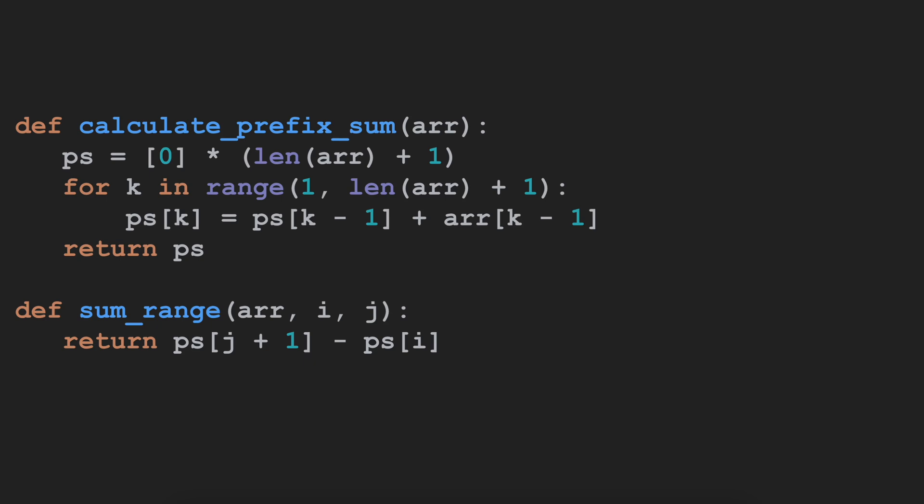And every time now when we are calling sum_range, we are just taking the prefix sum, the new array that we have just pre-calculated all the values, we are taking the value of j minus whatever the value of i and returning that. In this case, our time complexity of sum_range is now reduced to O(1) because it's constant.